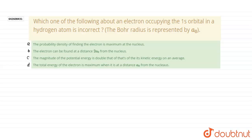Hi guys, in this question, which one of the following about an electron occupying the 1s orbital in a hydrogen atom is incorrect? And the Bohr radius, Bohr radius is represented by A or A0. We have four options here.